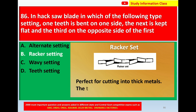The raker setting diagram shows teeth in sets of three, perfect for cutting into thick metals. For question 86, in the hacksaw blade where one tooth is bent one side, next flat, and third on opposite side, the correct answer is option B: raker setting.